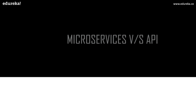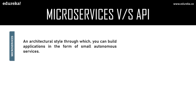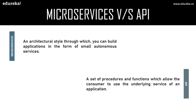Now for the differences between microservices and APIs. These are two completely different things. Microservices is an architectural style through which you build applications as small, autonomous services. APIs are a set of procedures and functions which allow the consumer to use the underlying service of an application — they act as the middle layer between the client and the services. APIs are a part of microservices and help services communicate with each other, and each service can have its own CRUD operations to store relevant data.